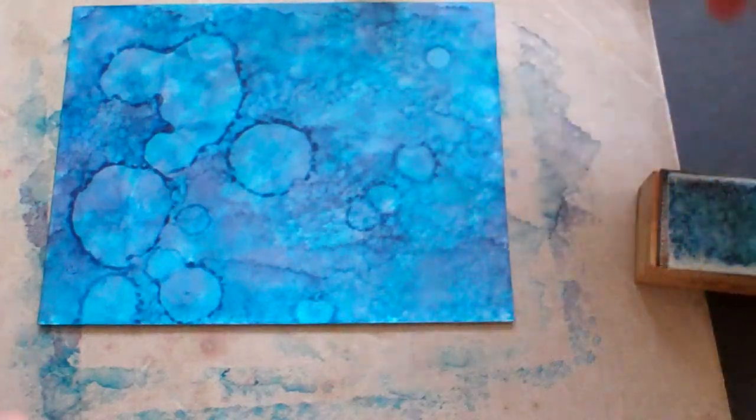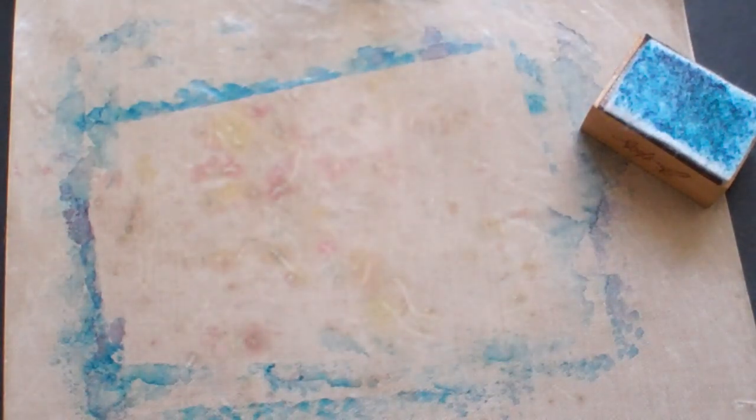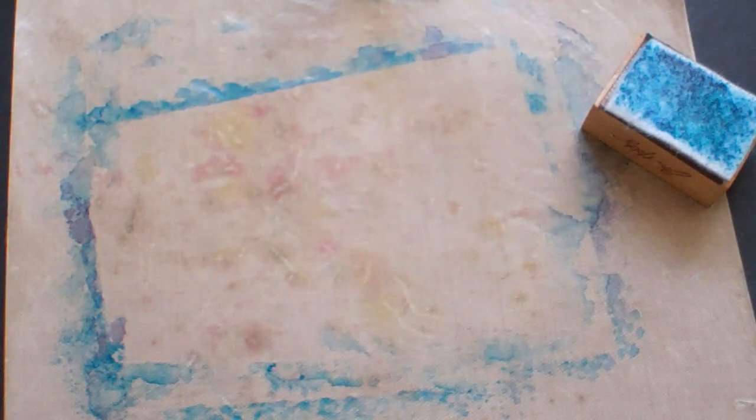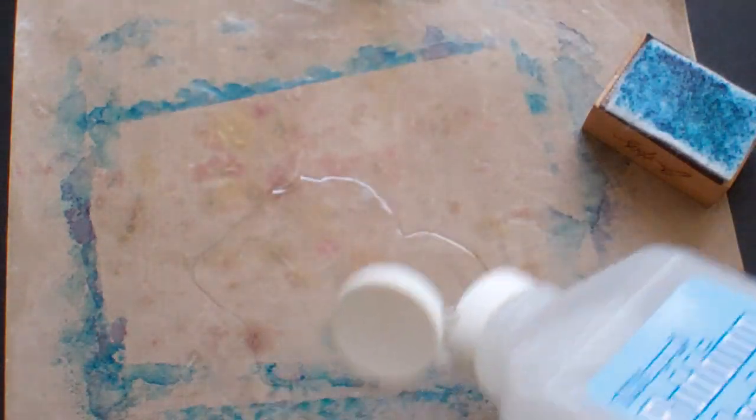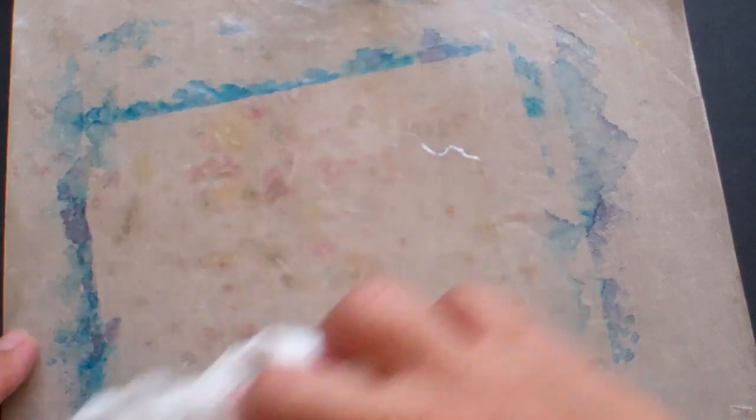And then this dries pretty quickly. And just so you know, to clean up this craft mat you can use your alcohol blending solution, but I refuse to waste it. It's not cheap. I just use this rubbing alcohol from Walmart. I just do this and I take a paper towel and just clean it off and that's it.